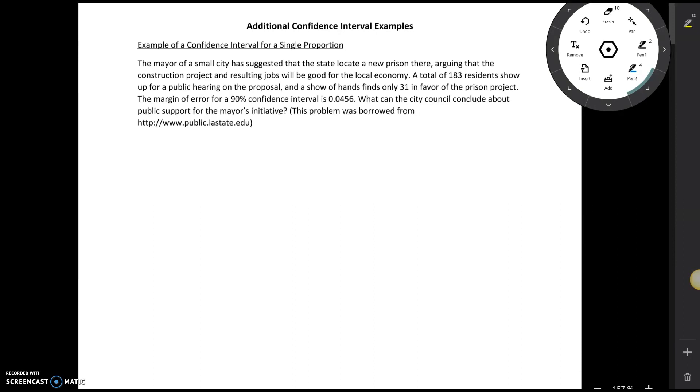First of all, notice here that we had 183 residents, so there were 183 people in the sample. Then what we did for each of those people is we saw if they were in favor or not in favor of the prison project, so we had 31 in favor. Notice this is categorical data because each person is either going to be a yes or a no, and we only have one group. We summarize categorical data with a proportion, so that tells me I'm working with a single proportion.